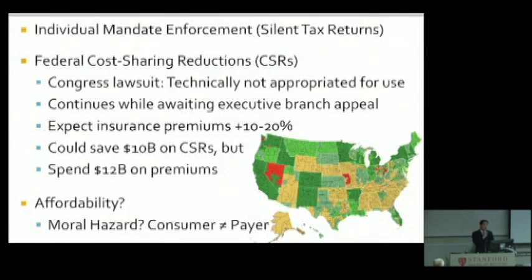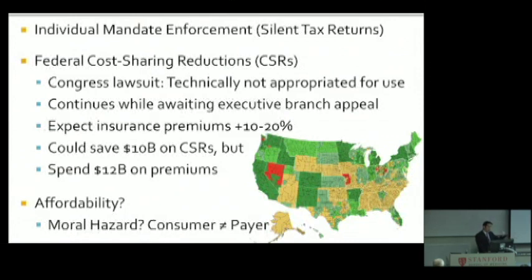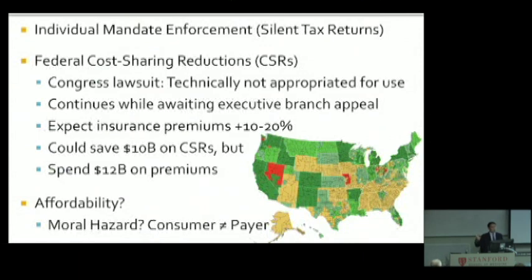Another point of attention: federal cost-sharing reductions — those are the things that help low- to middle-income people pay for their deductibles or co-pays. Congress filed a lawsuit a couple years ago saying there's a technicality that the ACA did not appropriate that money properly. A judge upheld that ruling, but the executive branch under Obama appealed it and kept paying in the meantime. Trump has inherited that responsibility and is continuing to pay those cost-sharing reductions, but conceptually he doesn't have to — he could drop the appeal and just stop paying them out. If that were to happen, insurance companies would increase premiums 10 to 20% to make up for that risk. Ironically, although the government would save $10 billion by not paying these cost-sharing reductions, they'd actually pay out more — about $12 billion in premium subsidies — because premiums would go up so much.